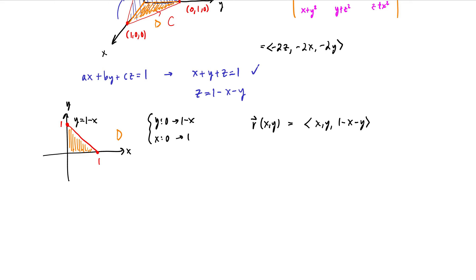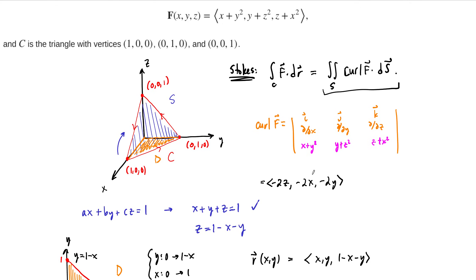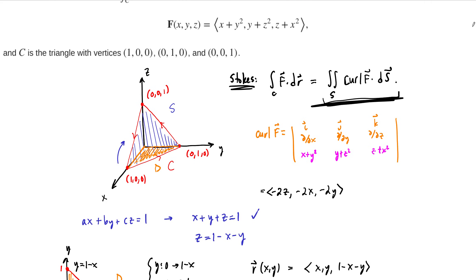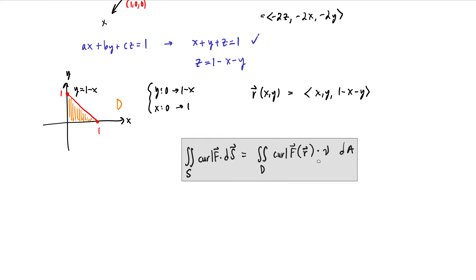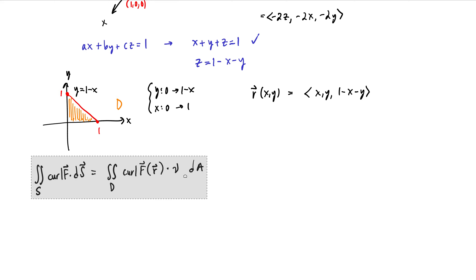The reason we want this parametrization is that we need to compute the surface integral: the double integral over S of the curl of F dotted with dS. This is computed as a double integral over the parameter domain of the curl of F evaluated along R, dotted with the normal vector field ν, times dA. So we need to compute that normal vector field ν — note this is not the unit normal.